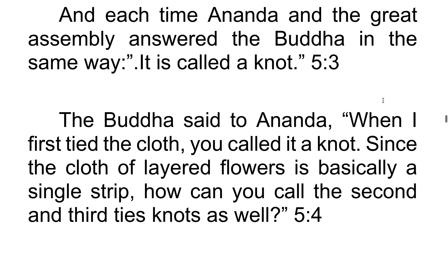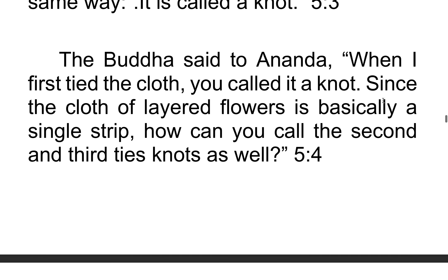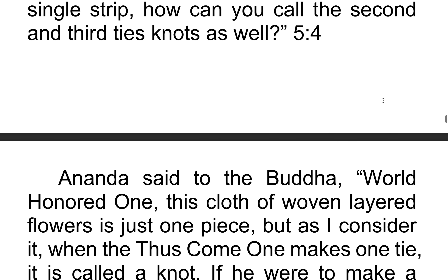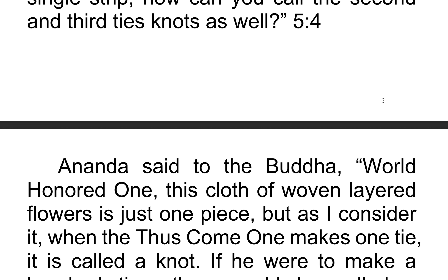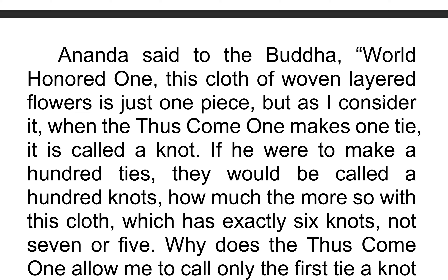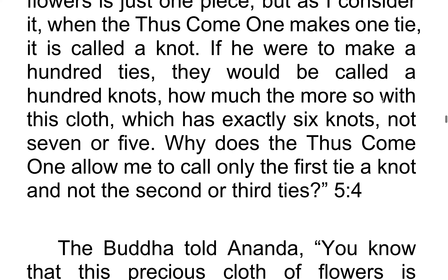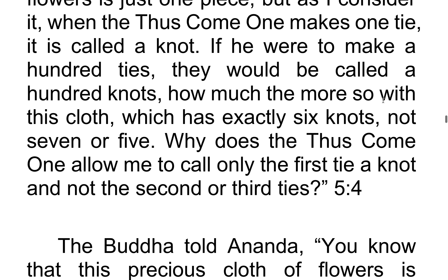The Buddha said to Ananda, "When I first tied the cloth, you called it a knot. Since the cloth of layered flowers is basically a single strip, how can you call the second and third tied knots as well?" Ananda said to the Buddha, "World Honored One, this cloth of woven layered flowers is just one piece. But as I consider it, when the World Honored One makes one tie, it is called a knot. If he were to make a hundred ties, they would be called a hundred knots. How much the more so with this cloth, which has exactly six knots. Why does the World Honored One allow me to call only the first tie a knot and not the second or third ties?"